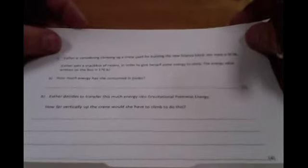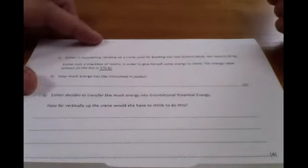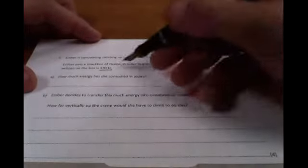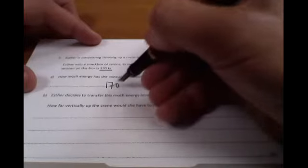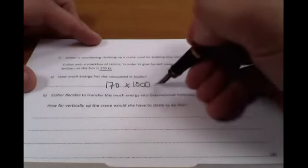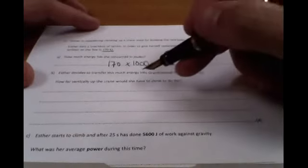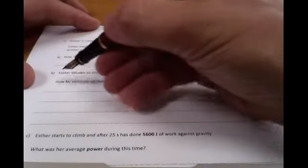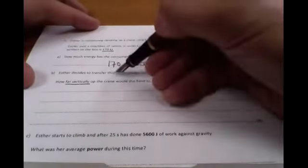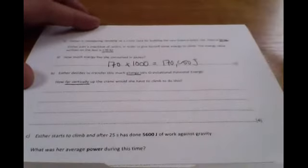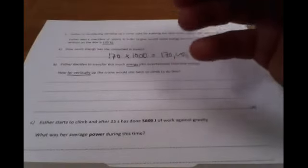All right, here we go then. Next question dealing with crane, climbing a crane, dealing with energy conservation here. So all those three equations of GPE, KE, work done ought to spring to mind. First one was straightforward. The energy value written on the box, how much energy does she consume in joules using the box of raisins? 170 kilo, remember kilo you multiply by 1000. It's straightforward, hopefully you all got that mark. How far vertically up the crane should she have to climb to do this? Far vertically, energy, and you have a mass up there. So how high would it be? Well, we need to use one of our equations which we learned.